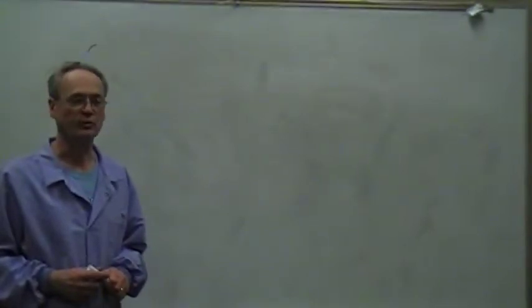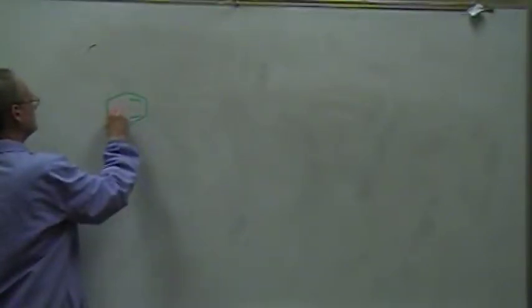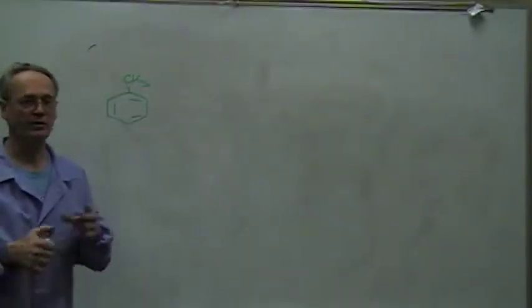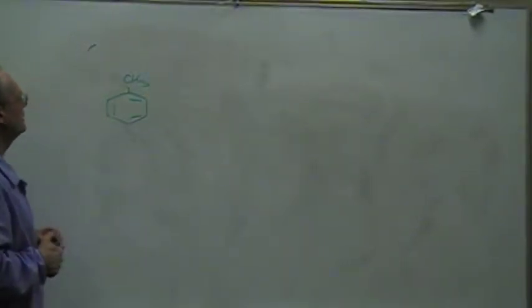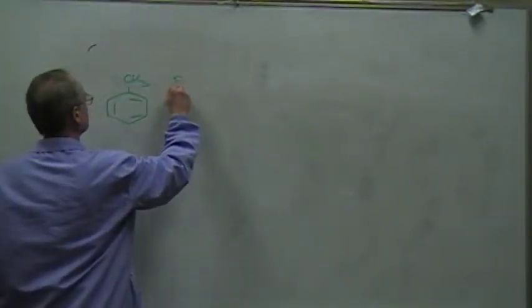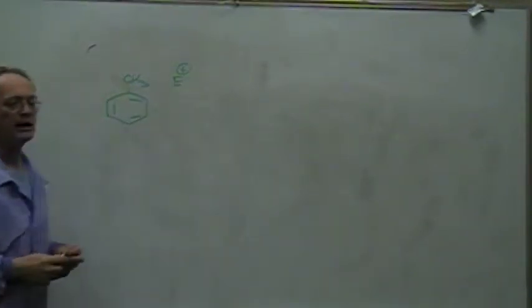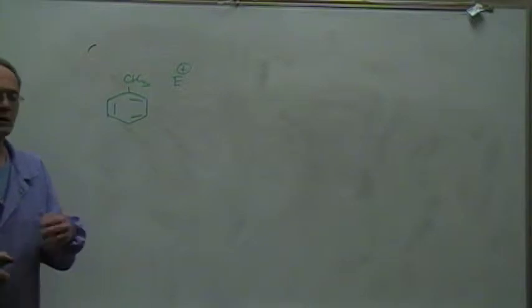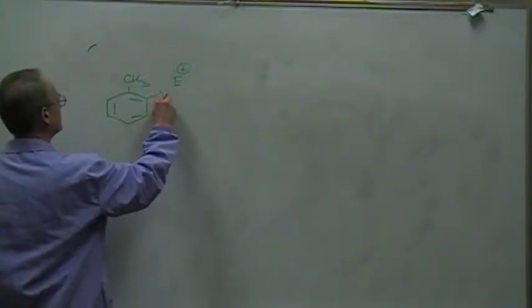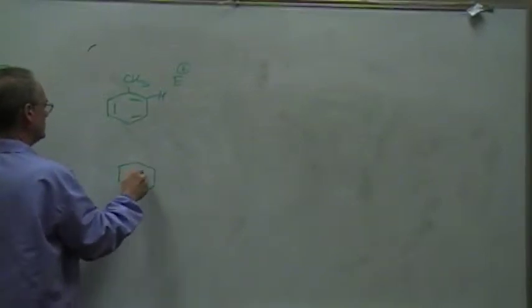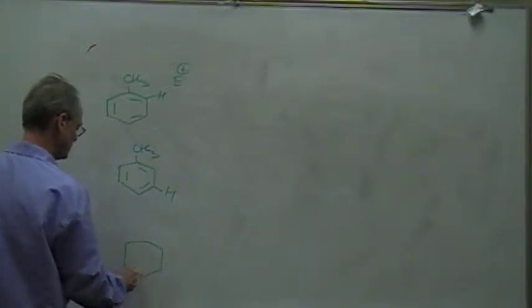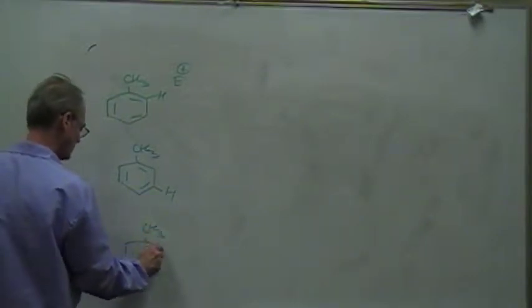The first case we're going to start with is toluene. We have a molecule that has an alkyl group on it, and that will serve as a model for any alkyl group, whether it's ethyl or propyl or any other group. We're going to bring in the electrophile, which is the positive thing, and I'm just going to use E+ as an example. We're going to attach it to each of the three different positions: ortho, meta, and para.